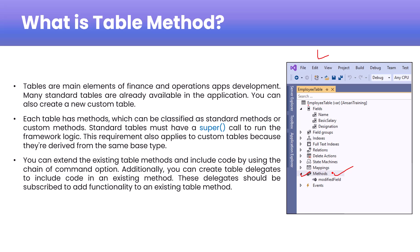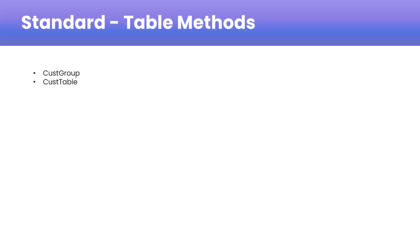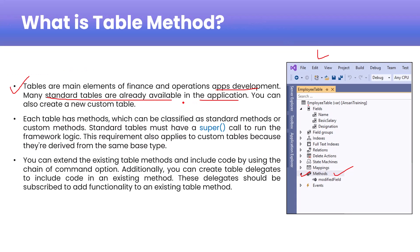These methods are called table methods. Tables are one of the main elements of Finance and Operations app development, and many standard tables are already available in the application — for example, CustGroup and CustTable. These are some examples of standard tables, and you can also create new custom tables.